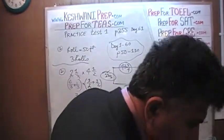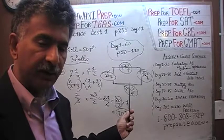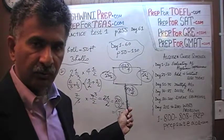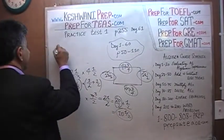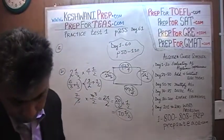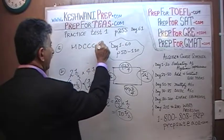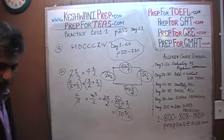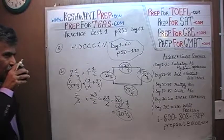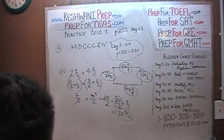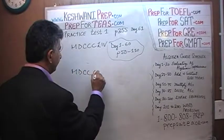Let's do number 3. I am reminding you again that I am assuming you have watched all the videos before — 1 through 60 — because all the concepts we learned before are what they are looking for here. The next problem requires us to convert a Roman numeral into an Arabic number. The number they gave us is M-D-C-C-C-L-I-V.